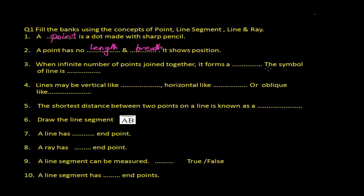When infinite numbers of points join together, it forms a line. The symbol of a line is written as we have been learning. Infinite — we cannot even count how many points there are — but ultimately they form a line. So remember: when infinite number of points join together, it forms a line, and the symbol of the line is written like this.